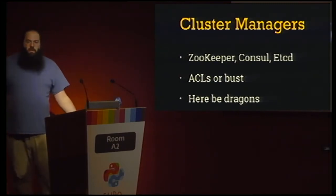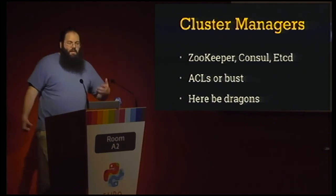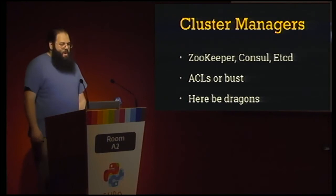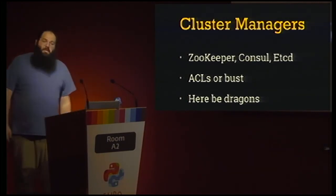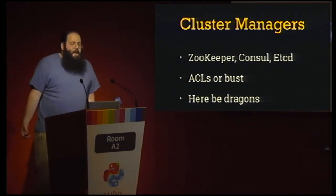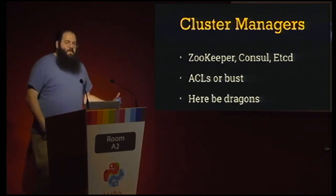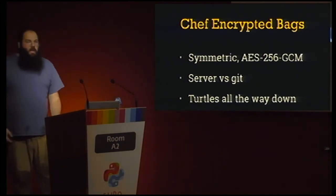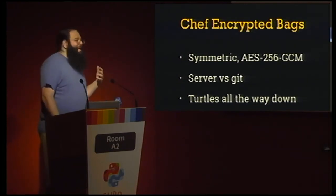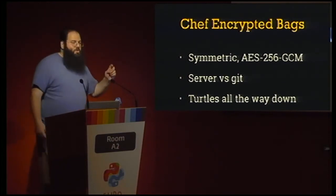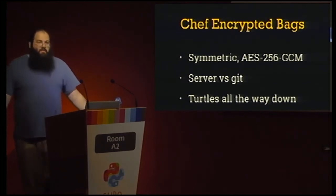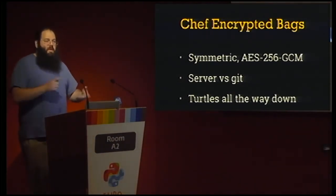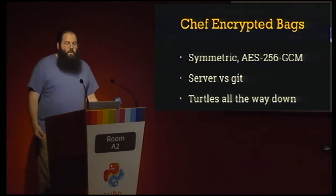Cluster managers like Zookeeper, Consul, and etcd are one step past git. They all have ACL systems you can use to implement least-access. Consul and etcd are okay; Zookeeper ACLs I wouldn't try. Chef encrypted data bags look appealing since encryption feels safe, but this is a symmetric system — the key used to manage all other secrets is itself a secret. Most of these symmetric tools just move the problem: you're going down a level of recursion rather than solving it. This is what I mean by turtles all the way down.